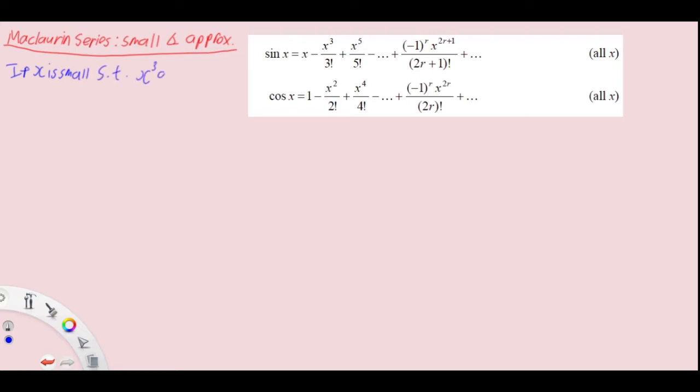So let's just say that because we're talking about small angle approximation, if x is small, such that x cubed and higher powers can be ignored, so basically x cubed and higher powers because the angle is so small, x is super small, x cubed and higher powers are simply too insignificant.